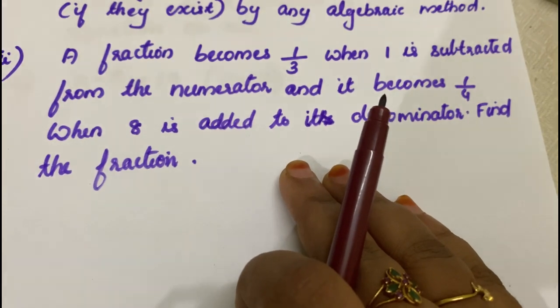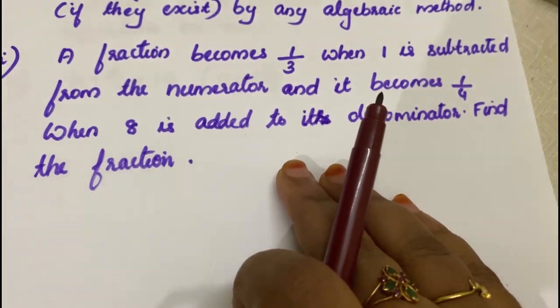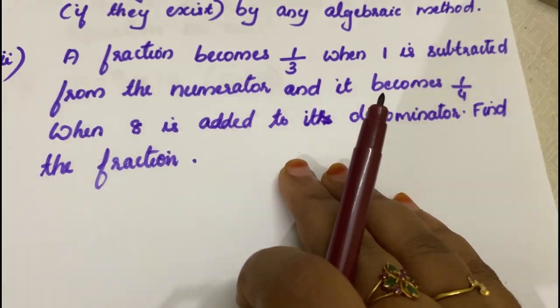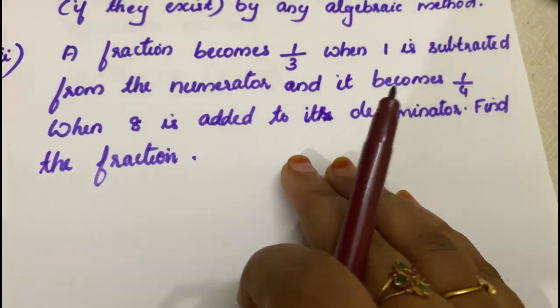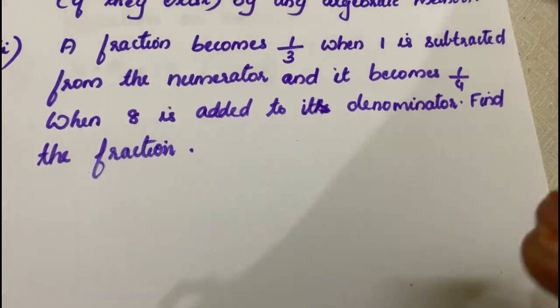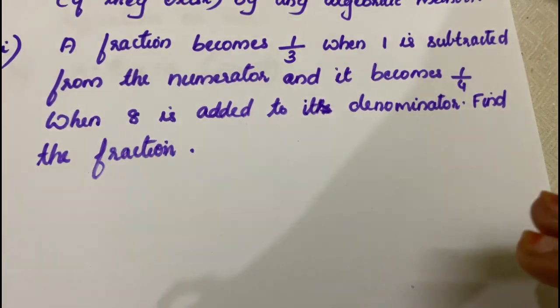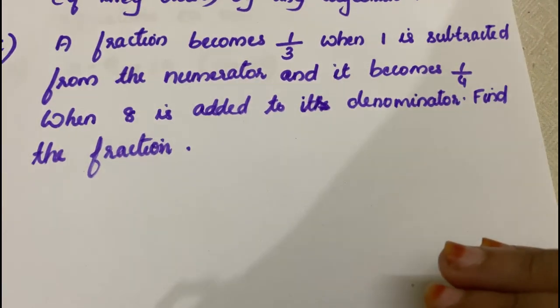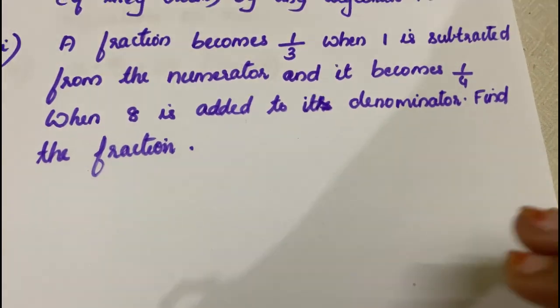A fraction becomes 1 by 3 when 1 is subtracted from the numerator, and it becomes 1 by 4 when 8 is added to the denominator.